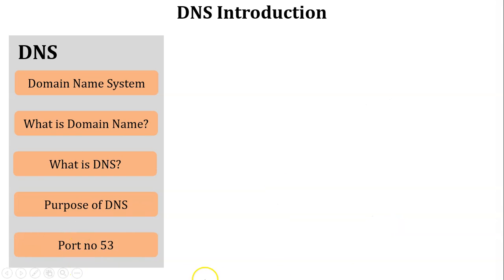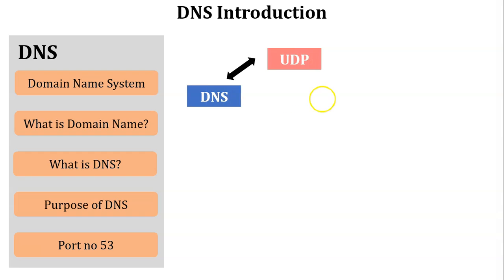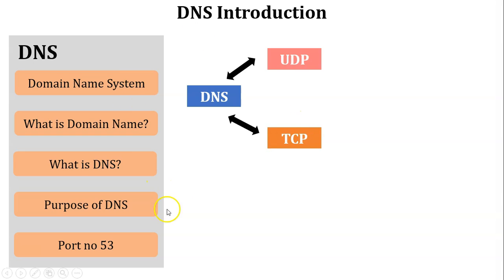DNS uses port number 53. The DNS process uses port 53 with both UDP and TCP protocols. However, in the working of DNS, UDP is the default protocol because DNS requires an immediate response to the user, and UDP is faster compared to TCP. So UDP is the default protocol of DNS.